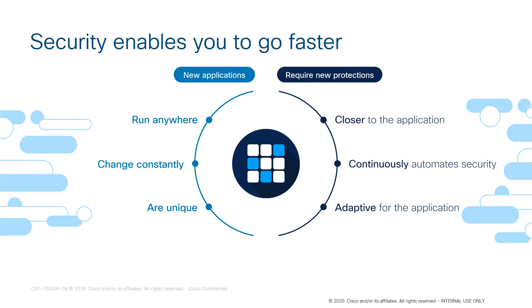As apps change over their lifecycle, security controls change as well. We built continuous automated security into the platform. When you add database servers to a cluster, you don't want to constantly recreate access lists — you want automation to say 'this database server belongs to this application' and push the existing security policies to that new server. Since each application is built differently, security needs to understand what the application is comprised of to adapt, while keeping things as simple as possible for us human beings.